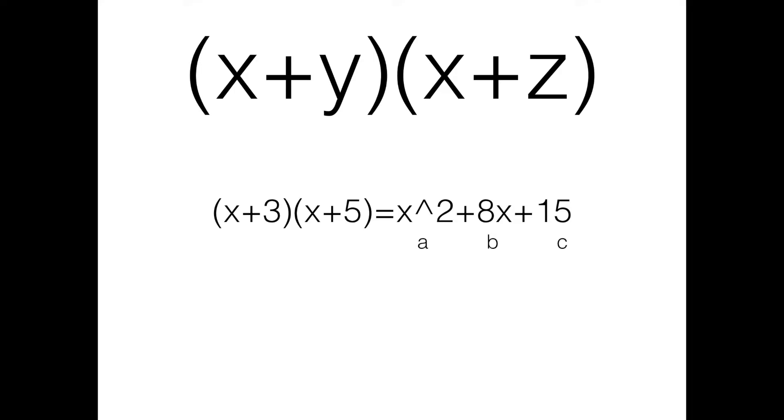If we substitute in the numbers we got earlier, which were 3 and 5, we get quantity x plus 3 times quantity x plus 5 equals x squared plus 8x plus 15. Later in the video, we will explain how we know this works.